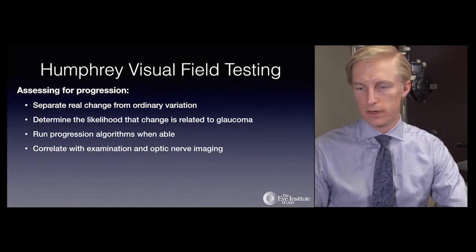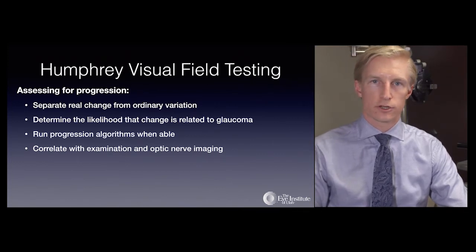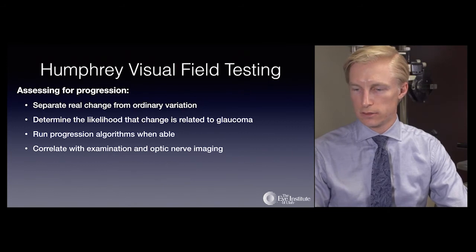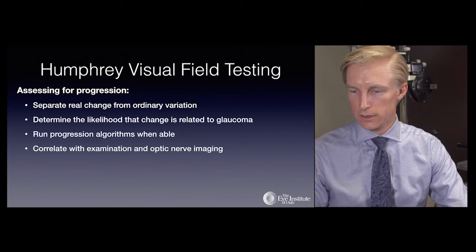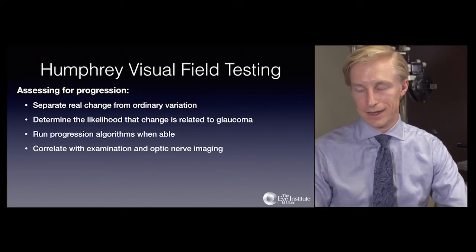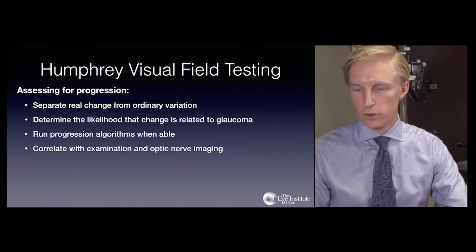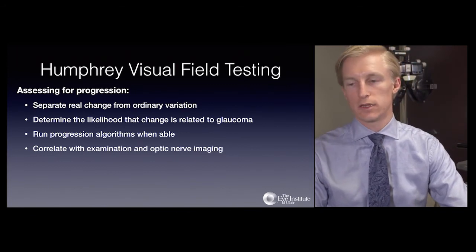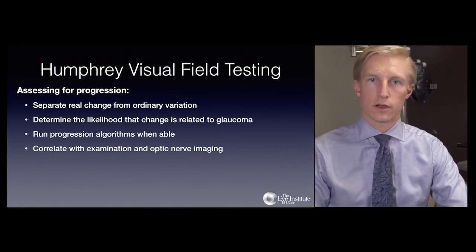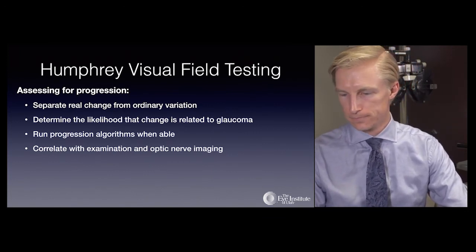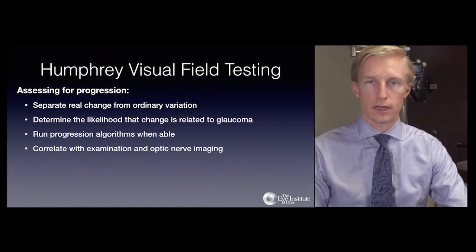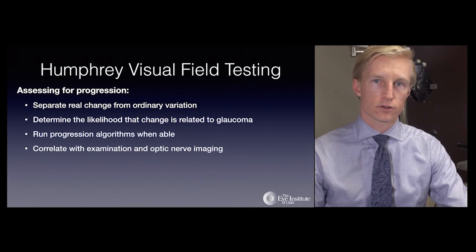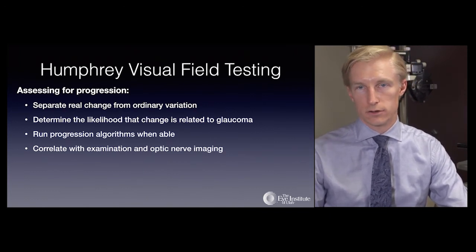In the assessment of progression, it is important to separate real change from ordinary variation, as some variability exists from test day to test day even in stable glaucoma. Determine the likelihood that change has taken place and that it is related to glaucoma. Run progression algorithms when possible — if a patient has at least two baseline fields, subsequent tests can be used with the Humphrey's automated software to assess progression. Correlate the exam with optic nerve imaging and the optic nerve head examination, as visual field progression should correspond with optic nerve findings.